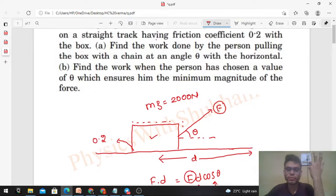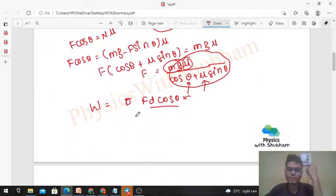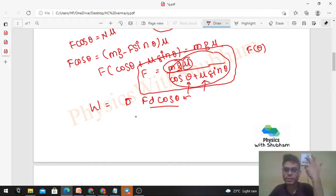Now the second part: Find the work when the person has chosen a value of θ which ensures him the minimum magnitude of the force. We have to minimize the force. Force is a function of θ. mg μ is constant, μ is constant. Only θ is in the denominator. So if you want to minimize F, you can maximize the denominator. The denominator is cos θ plus μ sin θ. If you have to minimize F, then you have to maximize the denominator.